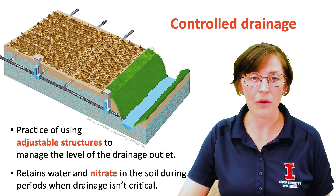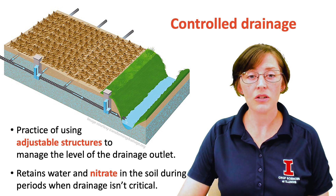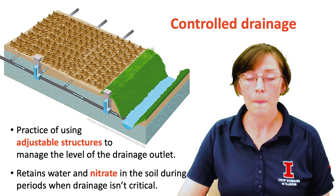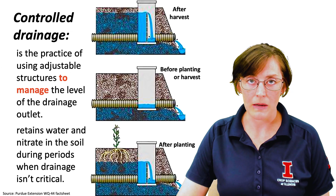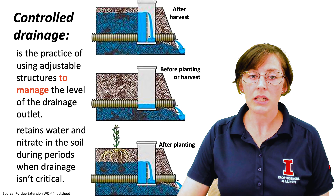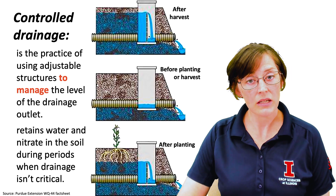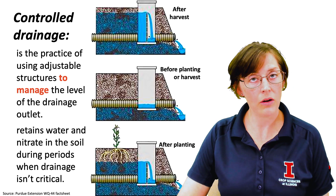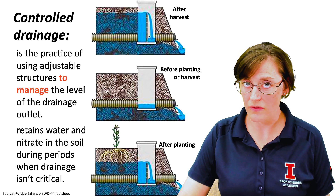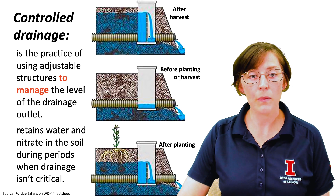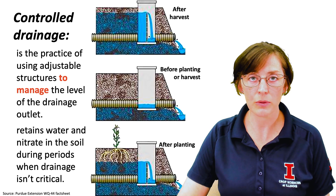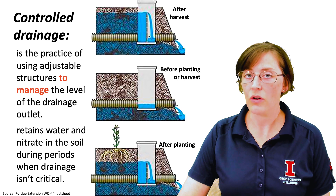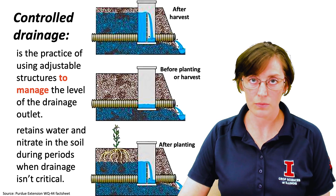There are two parts of this definition that I want to highlight. First, this practice usually involves a series of control structures throughout a field, so there is physical infrastructure involved. Secondly, there's also a management component involved in the practice of controlled drainage. The idea with controlled drainage management is that after harvest you insert boards into the control structure to increase the elevation of the drainage outlet. Water can't flow out of that drainage system unless it's at or above the elevation of that top board. Next, a couple of weeks prior to when you know you're going to plant or need to do springtime field operations, you remove all of those boards, and the drainage system is functioning at full capacity as it was designed to do to drain your field for springtime operations.